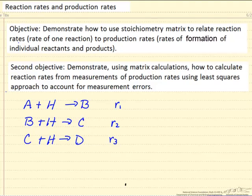For the example here, a three reaction system, R1 would be the reaction rate to production rates.